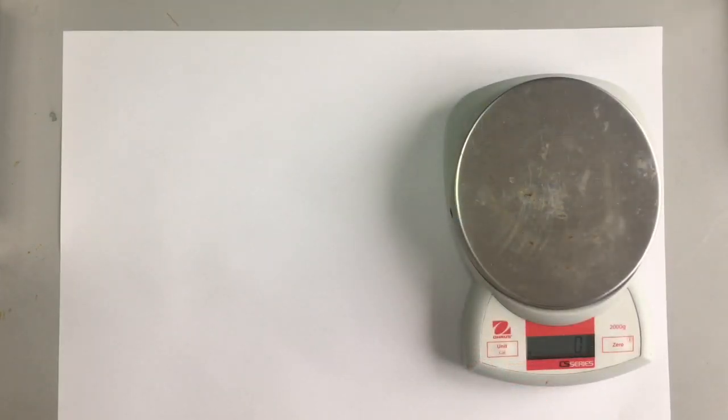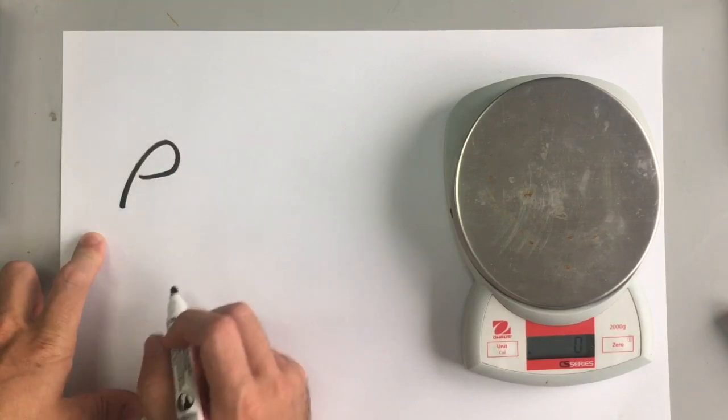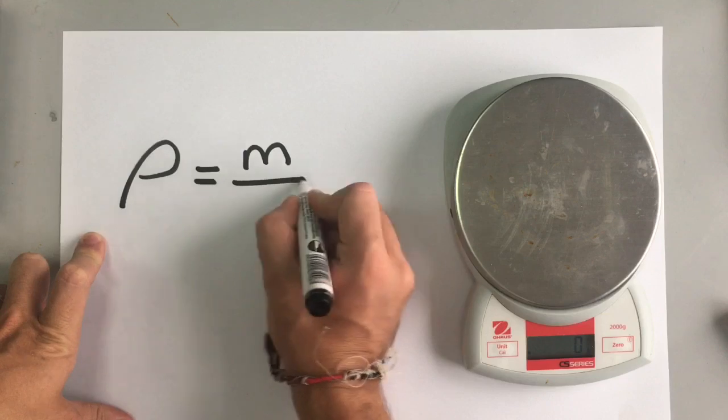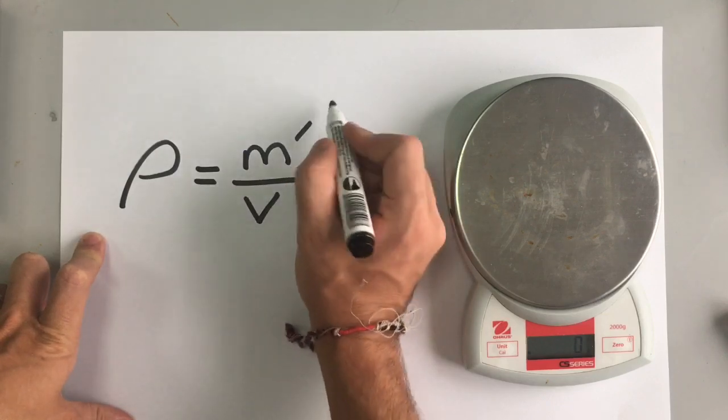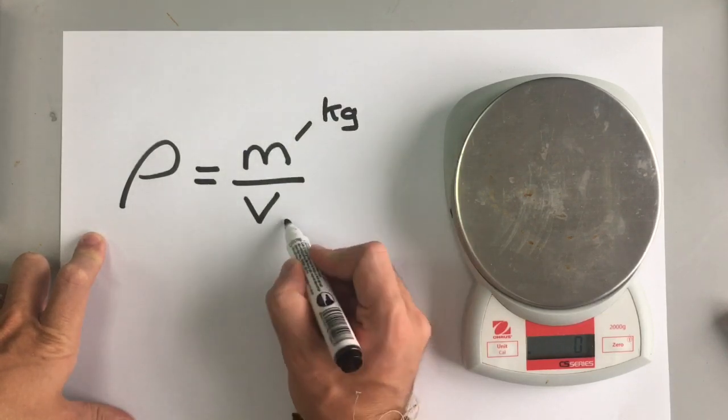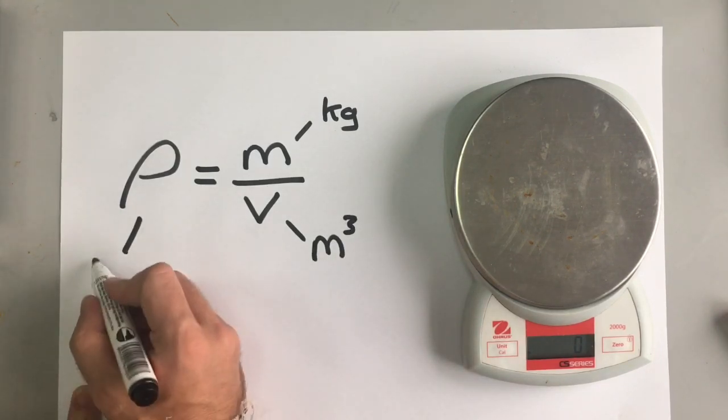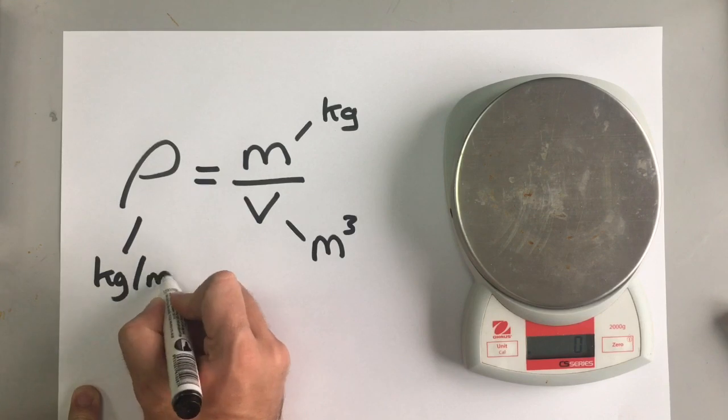Now we can use a very simple equation for this and that is density, which is represented by this Greek letter rho, is mass divided by volume. And remember mass is always in kilograms, volume is always in meters cubed. Density therefore is in kilograms per meter cubed.